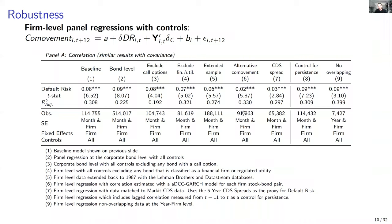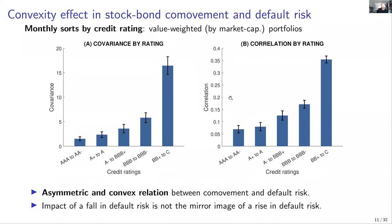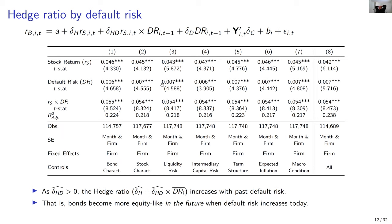In the spirit of Schaefer and Strebulaev, we also run a hedge-ratio regression: bond return on stock return plus the interaction of stock return with lagged default risk. The interaction term is always significant and loads positively — meaning the hedge ratio increases with default risk — which is consistent with bonds behaving more like stocks as default risk increases.